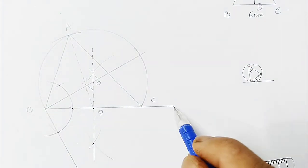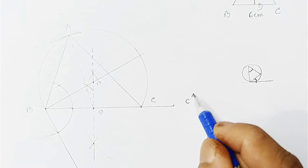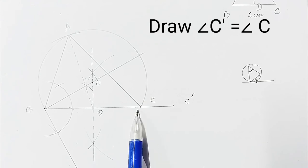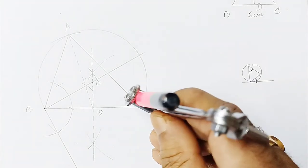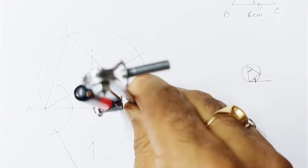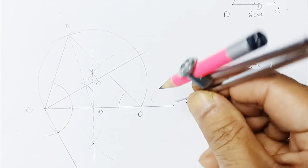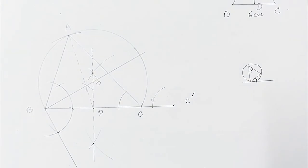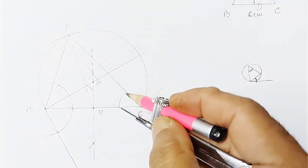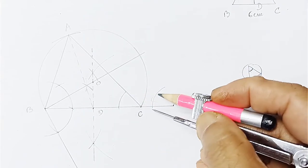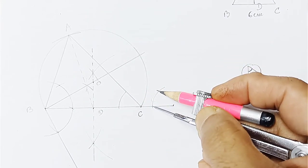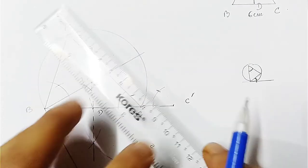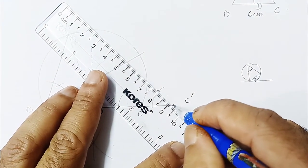This new endpoint is C'. Now draw an angle at C' equal to the angle at C. For this, draw an arc at C with the compass, then with the same measurement draw an arc at C'. Measure the angle at C and with that measurement cut the arc at C'. Join C' with the intersection point — this gives a line parallel to the previously drawn AC.